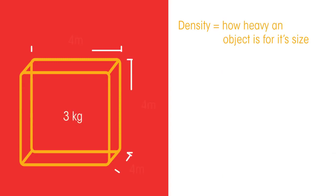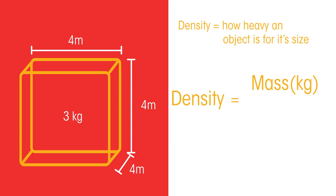Density is how heavy an object is for its size. To calculate the density of an object, divide its mass in kilograms by its volume in cubic meters. These are the units used for density.